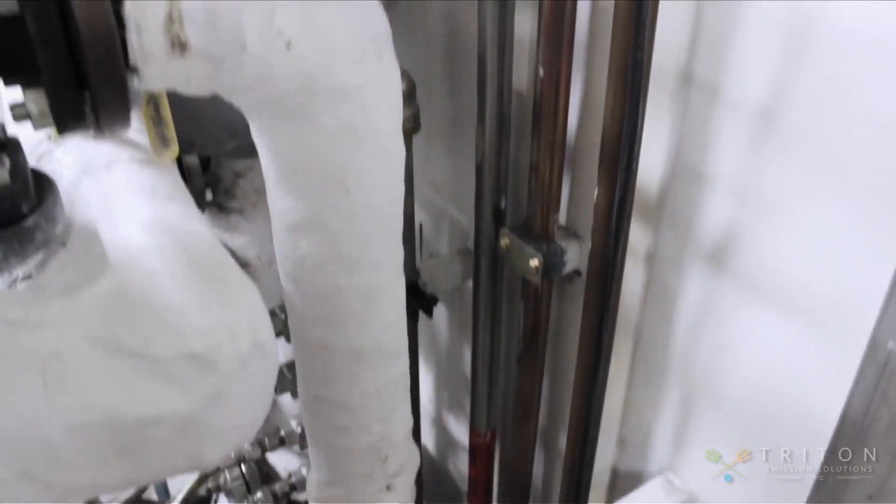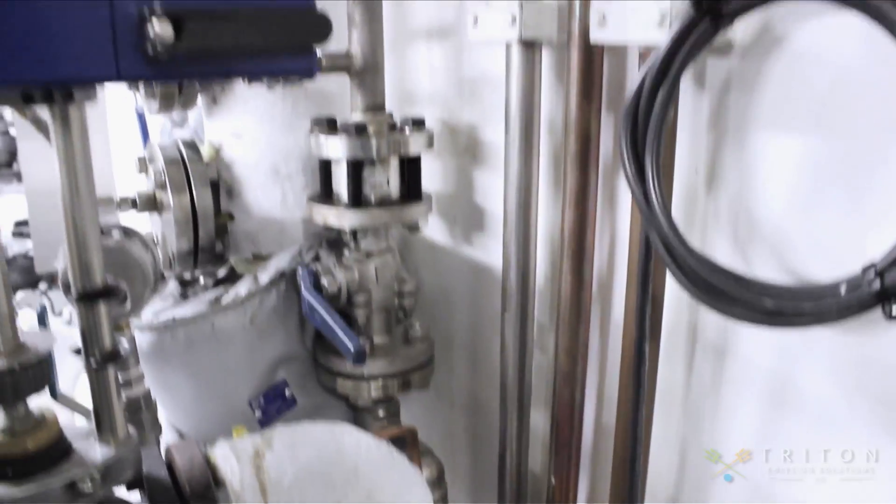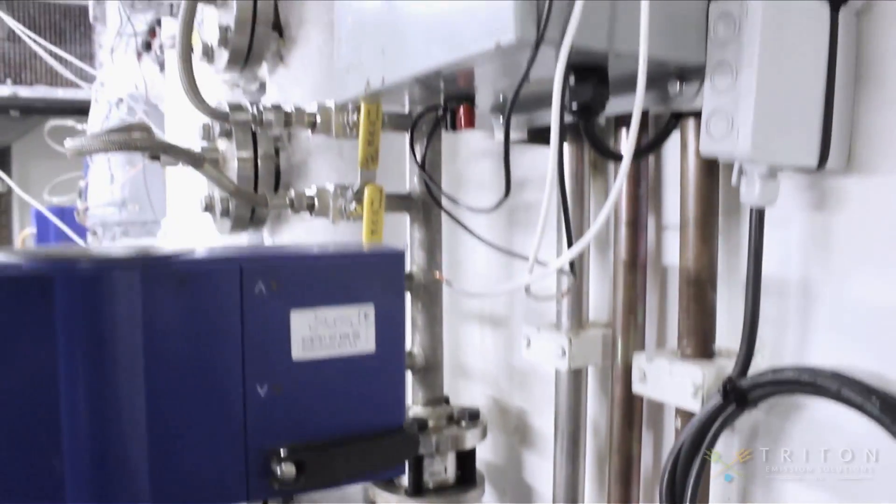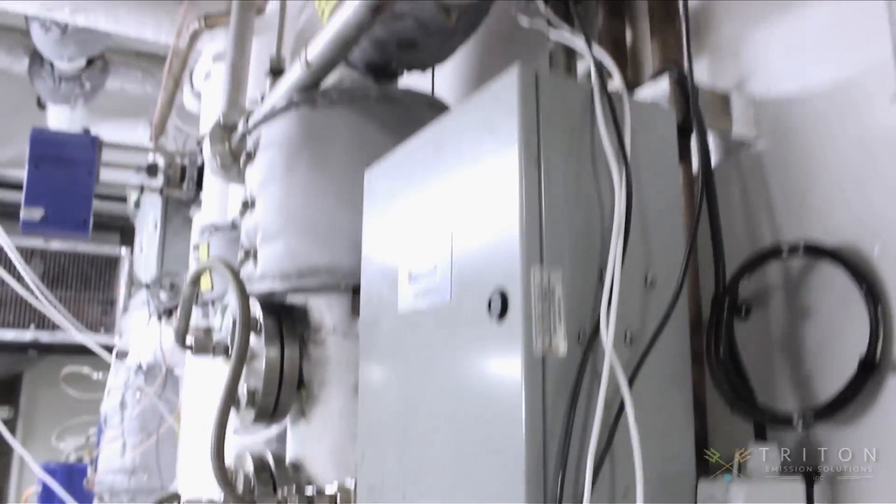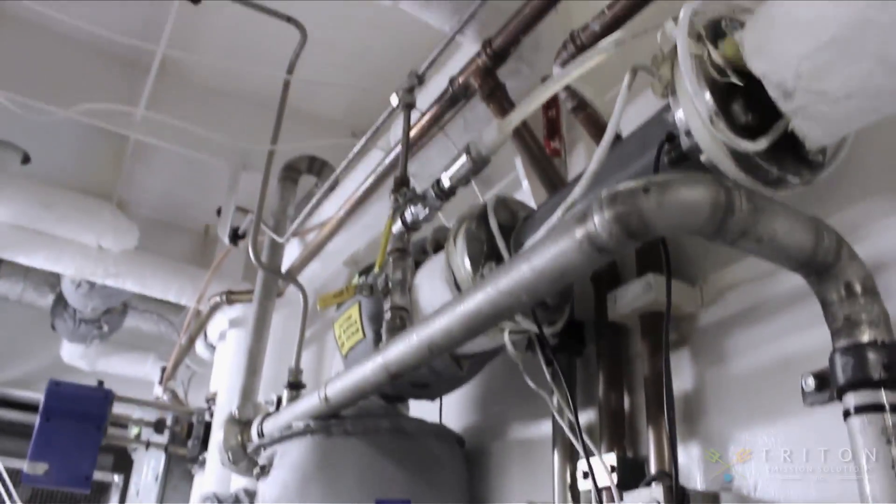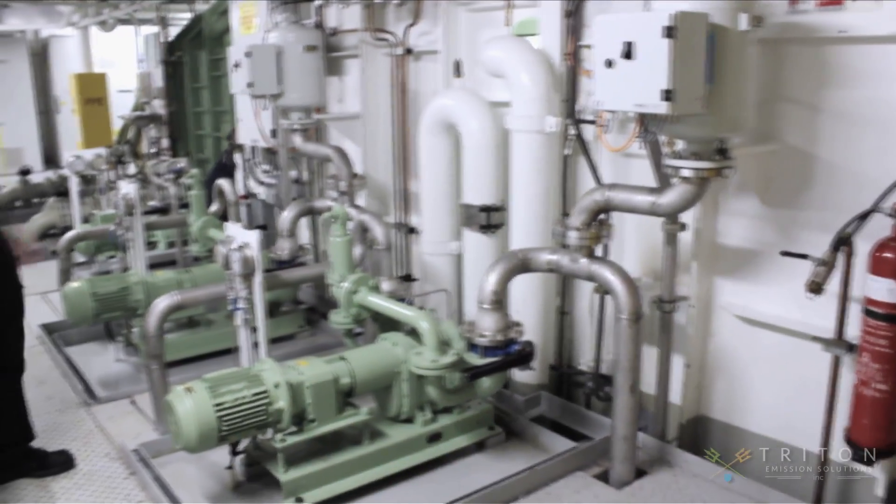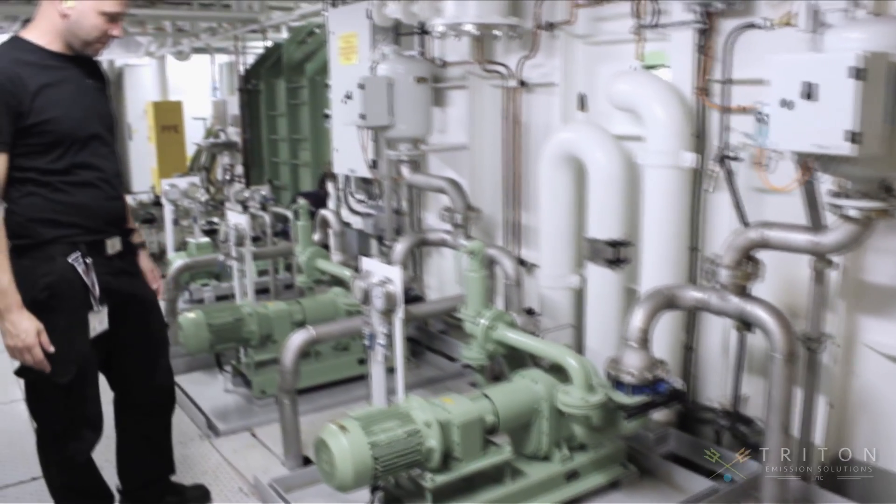Small dosing points are located throughout the system where additional chemicals or demulsifiers can be added as needed. Additional D-Sox units or homogenizer units can also be added based on the ship's needs.